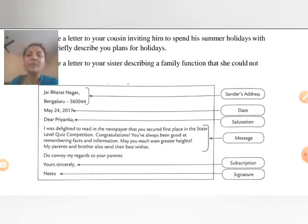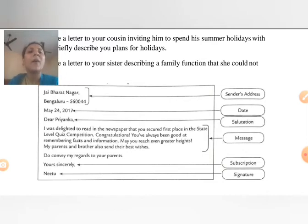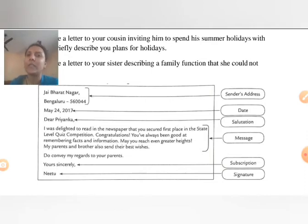Then you leave a line and write the full date. For example, 24th May or May 24, and after the month you put a comma and then the year. After the date also you leave a line, and then you write the salutation. For salutation you can write: Dear Priyanka, Dear Mother, Dear Father, Dear Sister, Lovely Mother, Lovely Father, Lovely Sister.